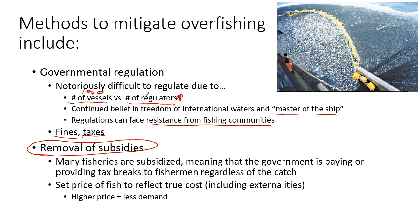Fishermen will obviously be resistant to removing subsidies since it's how they support their families. We also need to set prices that reflect the true cost of fishing, including externalities. A higher price will reduce demand for fish products. If prices are artificially cheap because of tax subsidies, we'll continue eating a lot of fish while these stocks are actually being depleted.